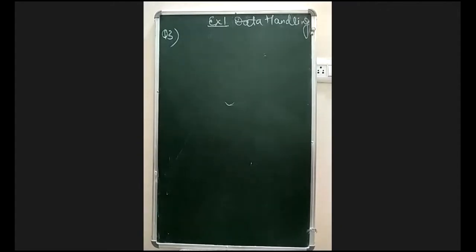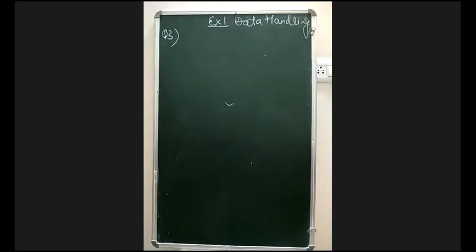There is a lot of data in the question, so please open your NCERT book along with your copy. The question says: use tally marks and make a frequency table with intervals as 800 to 810, 810 to 820, and so on. For question number three, we have to create a frequency distribution table.